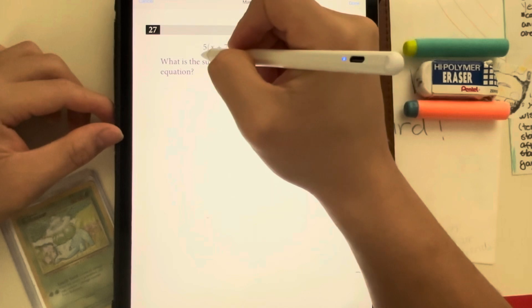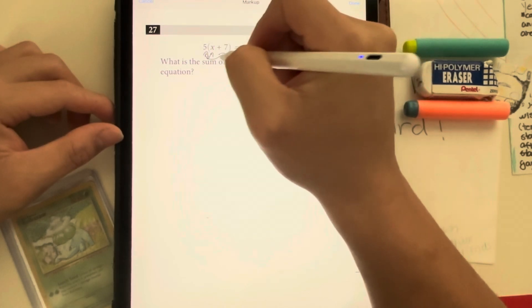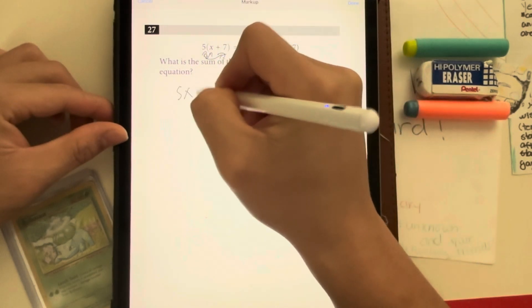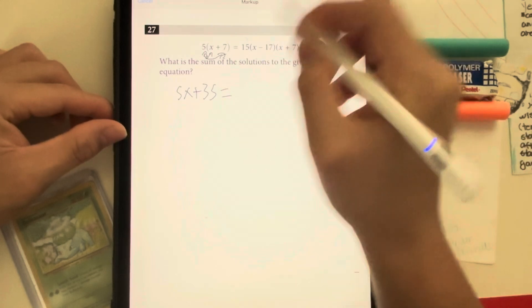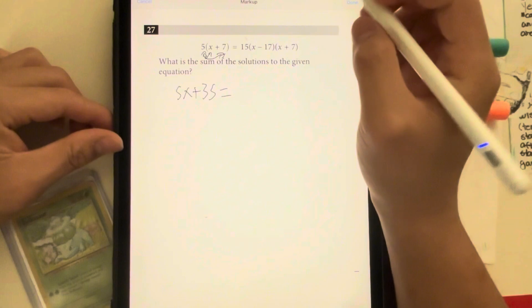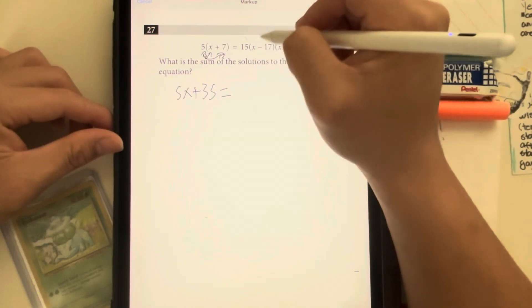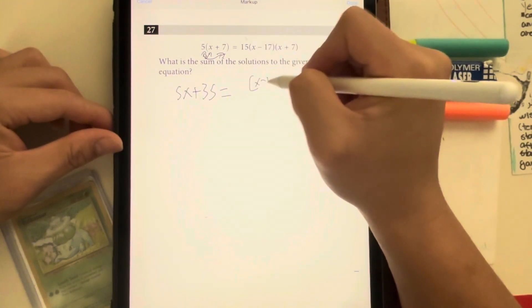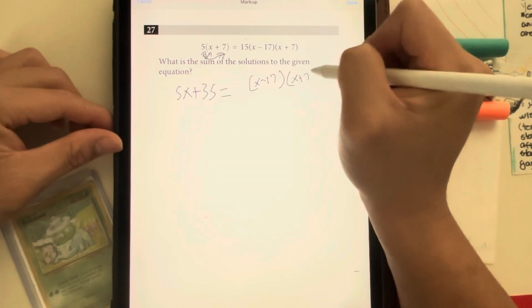When we distribute the 5 to x and 5 to the 7, I end up with 5x plus 35. And on the right side, I get 15 times x minus 17. But first before I distribute the 15, I'm going to just do x minus 17 times x plus 7.